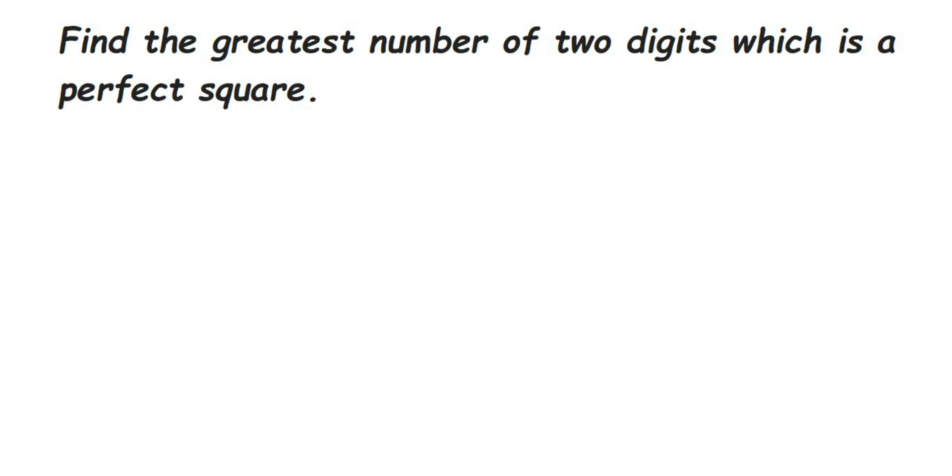Hey everyone, here's a question from square and square root. This is a one mark type of question. The question is: find the greatest number of two digits which is a perfect square.